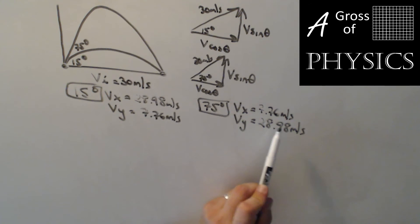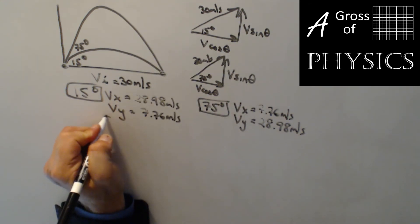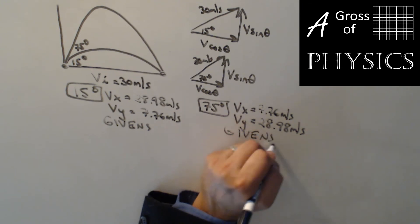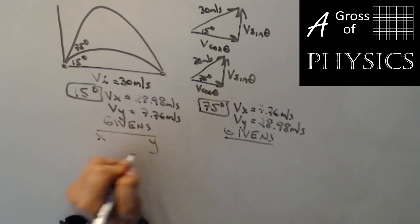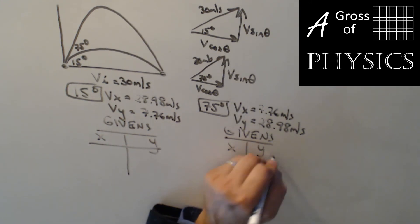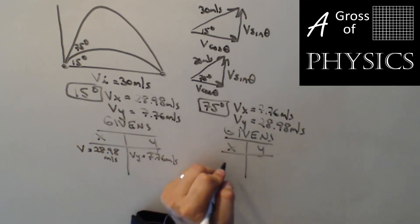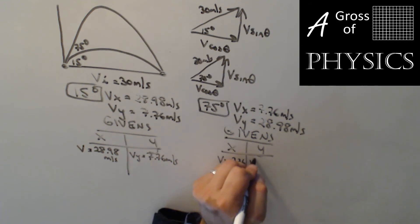So the 28.98 in the X becomes the 28.98 in the Y for the 75, and the 7.76 becomes 7.76 in the other direction for the X and Y for 75 to 15. Now when we do our calculations, what we'll have is X and Y, X and Y. So V is 28.98, Vy, 7.76, Vx, 7.76, Vy, meters per second, 28.98.